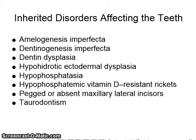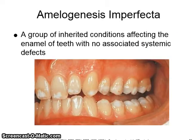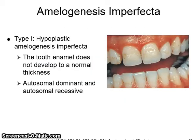Inherited disorders affecting the teeth. Amelogenesis imperfecta is a group of inherited conditions affecting the enamel of teeth with no associated systemic defects. Type 1, hypoplastic amelogenesis imperfecta, shows tooth enamel that does not develop to a normal thickness. It is autosomal dominant and autosomal recessive.